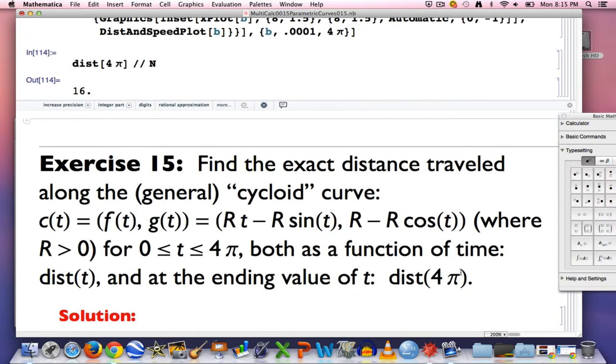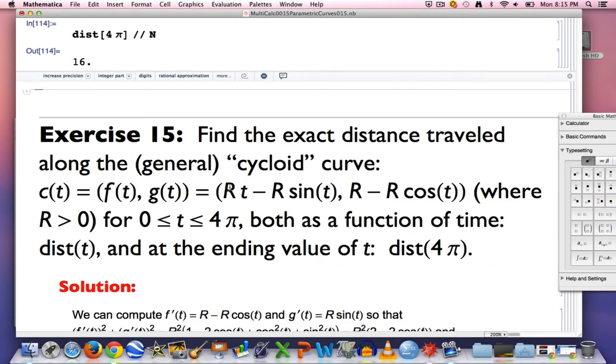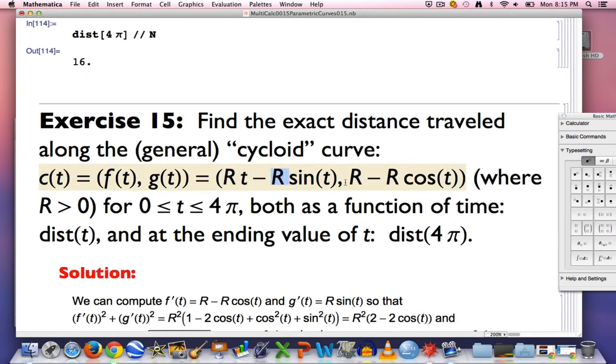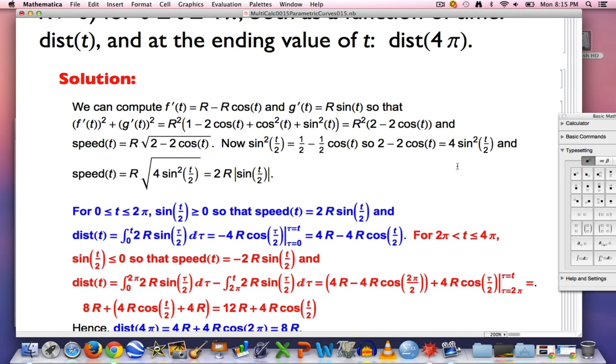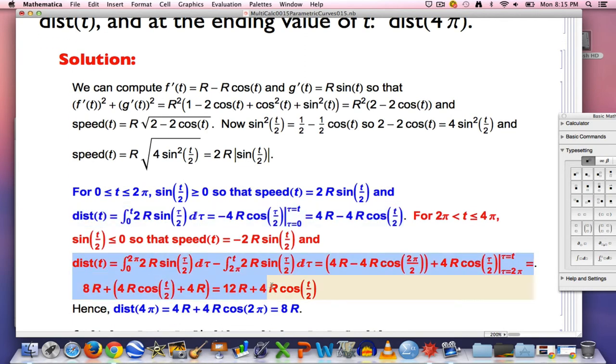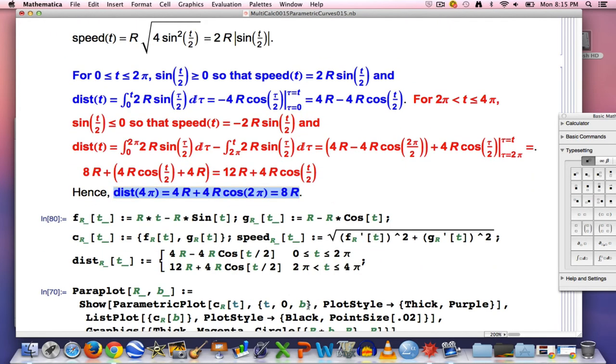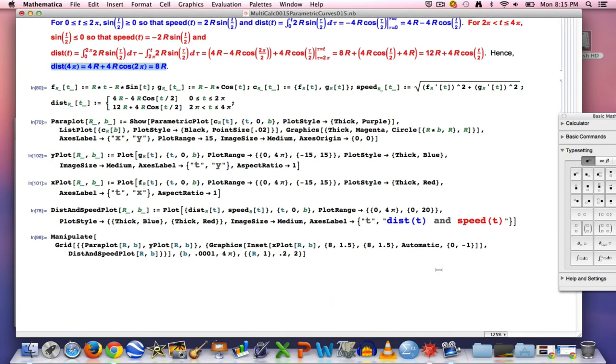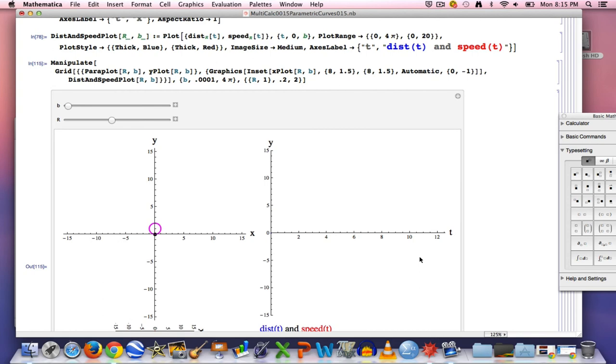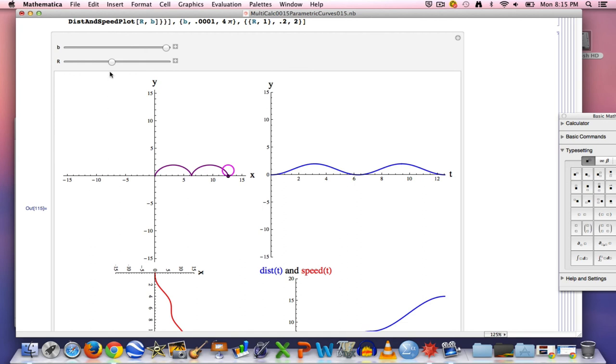All right. Here's your exercise. Basically, you're just generalizing what I did. You have this arbitrary r in there. So the answer is going to depend on r. Here's dist(t) in the first case. Here's dist(t) in the second case. And the total distance traveled over 4π units of time is 8r. And when you enter all this stuff to see the animation, you can do a double animation. Not only do we see time go by, but I also allowed you to change r, which allows you to change the size of the wheel, make it smaller or larger, which does affect the distance traveled. Okay.